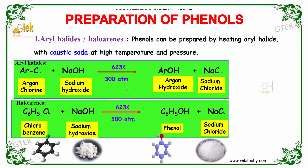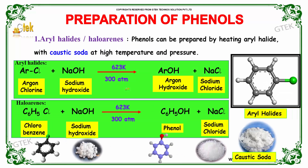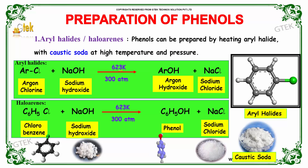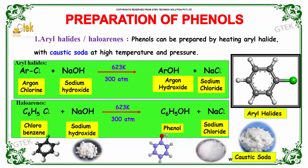Let us now study about the preparation of phenols. Phenols can be prepared by heating aryl halides with caustic soda at high temperatures and pressures. Taking aryl chloride along with sodium hydroxide at 623 Kelvin and around 300 atmospheric pressure, we would obtain aryl hydroxide along with sodium chloride.